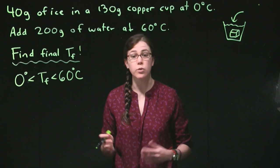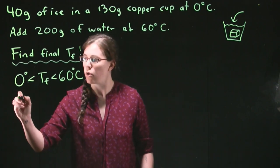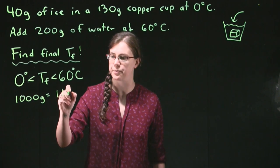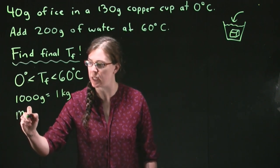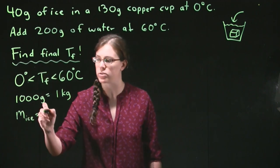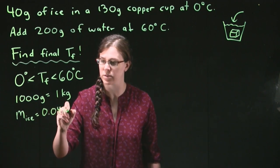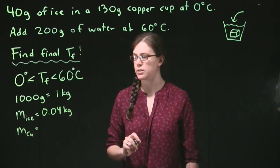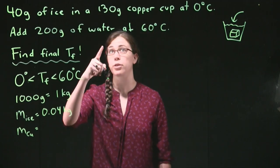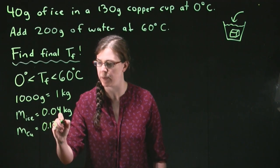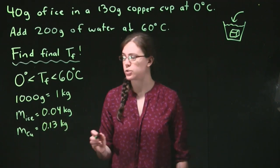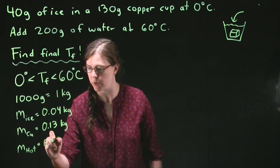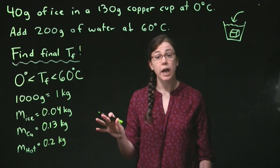We know that 0°C < T_final < 60°C. We also know that all of these numbers that were given, we have to put into kilograms. From our book, from our equation sheets, we know that 1,000 grams is in one kilogram. The mass of the ice: 40 grams divided by 1,000 is 0.04 kilograms. The mass of the copper, M_Cu, is 130 grams divided by 1,000 is 0.13 kilograms. And the mass of the hot water is 200 grams, so 0.2 kilograms.